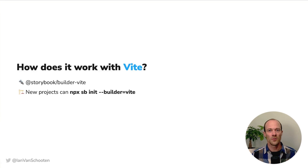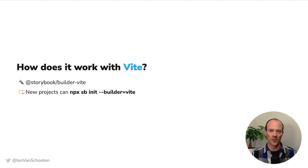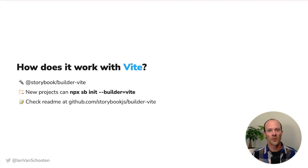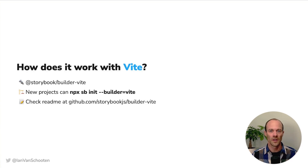So if I've convinced you to give Storybook a try, how do you get it set up and running with Vite? The package that lets you do this is called storybook-builder-vite and it's the one that I help to maintain. The easiest way to get up and running in a project that isn't already using Storybook is to run npx sb init with a --builder=vite flag to make sure that the Vite builder is used. I also recommend going to the readme on the GitHub to check more information about how to set things up or to migrate over from a Webpack-based Storybook. And of course, feel free to open issues if you hit any problems along the way.